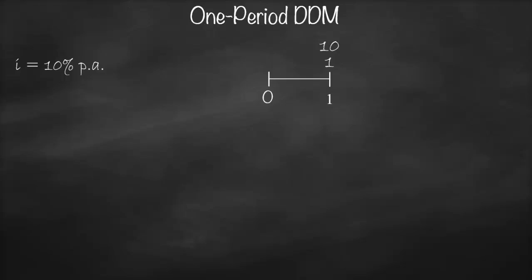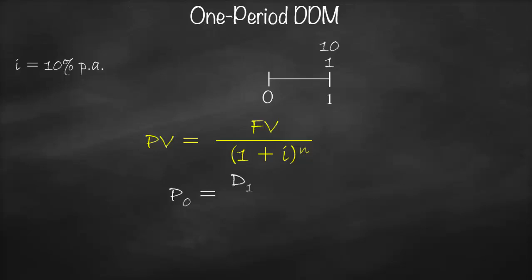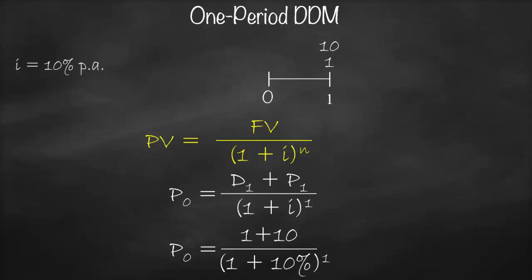Which formula are we going to use? We will use the present value of a single cash flow: PV = FV / (1 + i)^n. So the price today is equal to (dividend in year one + price in year one) / (1 + i)^1. Substituting numbers: P0 = (1 + 10) / (1 + 10%)^1. This gives us $10 today, meaning this share is worth $10 today.